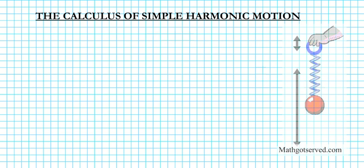Good day students. On this clip we are going to be going over a three-part example on how to find the velocity, acceleration, and jerk of the position function of an object that is exhibiting simple harmonic motion. Let's go ahead and write down the instructions for the example. The title is Calculus of Simple Harmonic Motion.